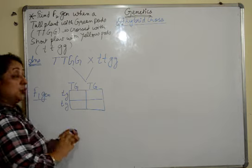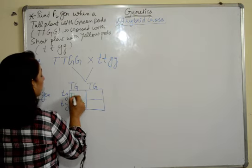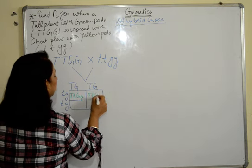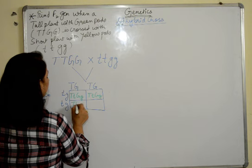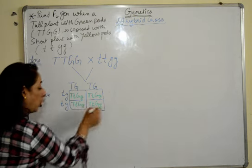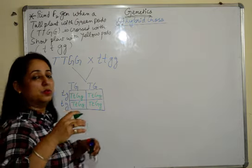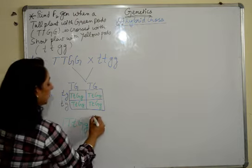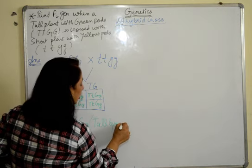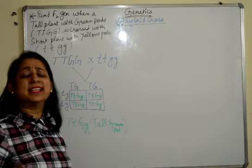And then we cross them. What do we get? To Mendel's surprise, again, he got all the offsprings as the same. That means in all the boxes the combination which he got was this. So what did he get? That the plant was tall. All the plants were tall with green pods. There was no variation.